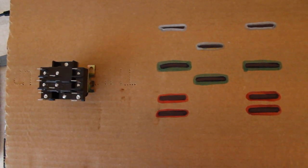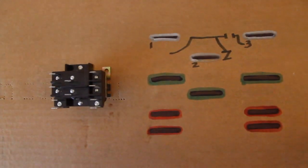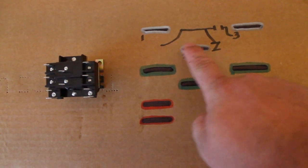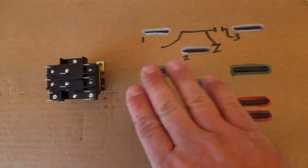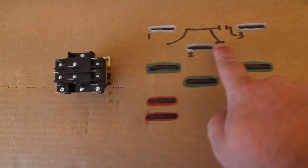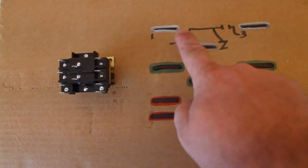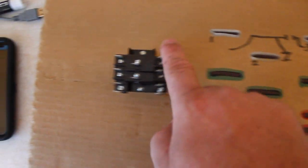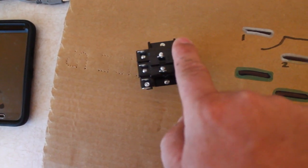We're now going to draw in the symbols that indicate how the switching action works. Here is the first set, the first switch. We're only looking at this section up at the top. So you have a number one, two, and three that labels each one of these pins on the relay.